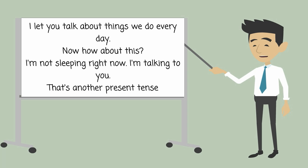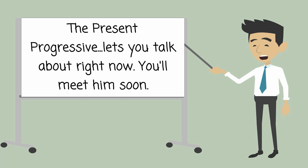I let you talk about things we do every day. Now how about this? I'm not sleeping right now. I'm talking to you. That's another present tense — the Present Progressive. It lets you talk about right now. You'll meet him soon.